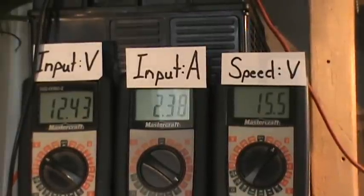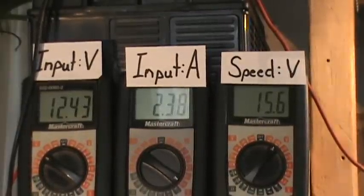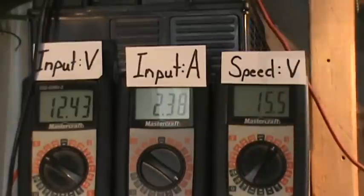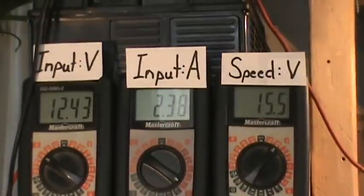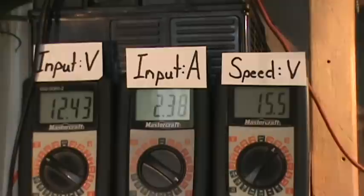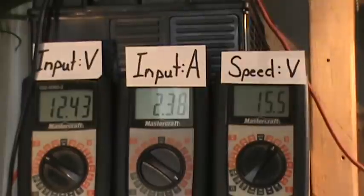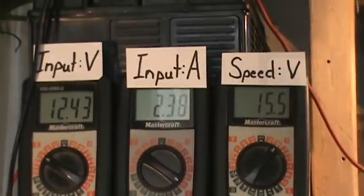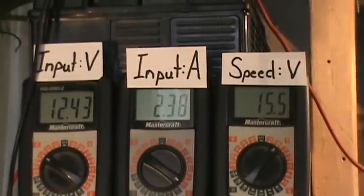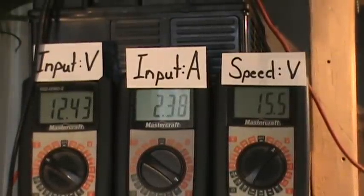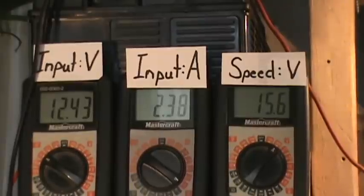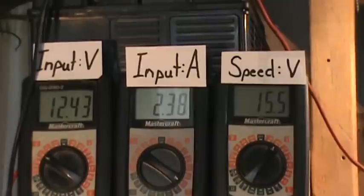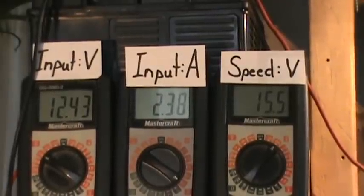15.5 volts on the measuring coil, 2.38 amps input, and 12.43 voltage going in. We had a starting voltage of 12.61. I think that's what it was, 12.61. Okay, we're going to turn it off.